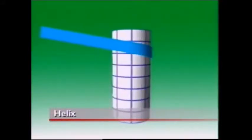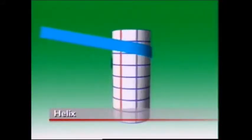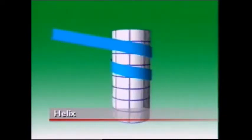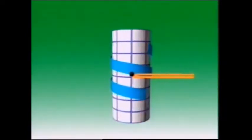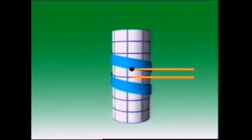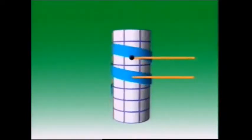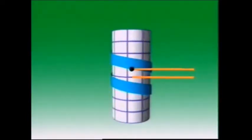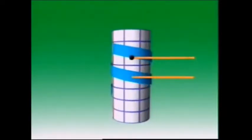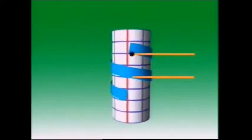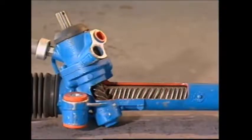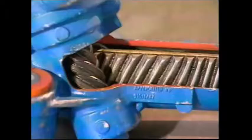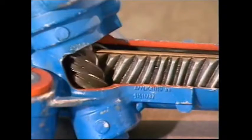If an inclined plane is wrapped around a cylinder, the edge of the plane forms a shape called a helix. Rotation of the cylinder causes a point on the helix to move along the surface of the cylinder. The distance the point moves in one revolution of the cylinder is called the pitch. The helix shape is commonly used as a thread on nuts and bolts and also for teeth in steering gears and transmissions.